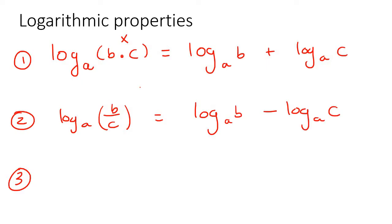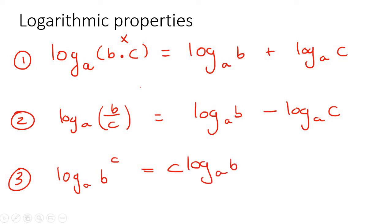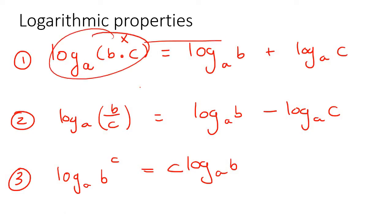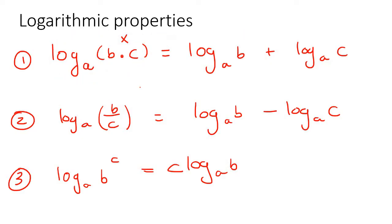The last property says that if you have log base A and there's some exponent, then what that becomes is you put the exponent in the front. For the rest of this lesson, we're going to learn how to go from expanded form to simplified form and also back again, so stick around for the whole video.